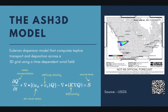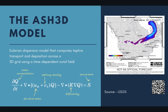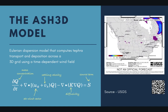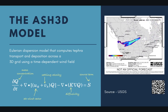So in this study, we use the Eulerian dispersion model ASH3D, which computes tephra transport and deposition over a 3D grid using a time-dependent wind field. We chose this model because of its capacity to use the time-varying wind field, and also it's been extensively tested and calibrated by authors at the USGS. Here I'm just showing some examples of the simulations that the USGS runs daily.